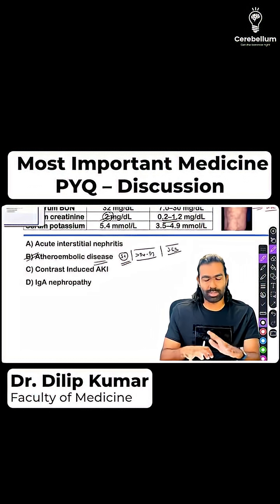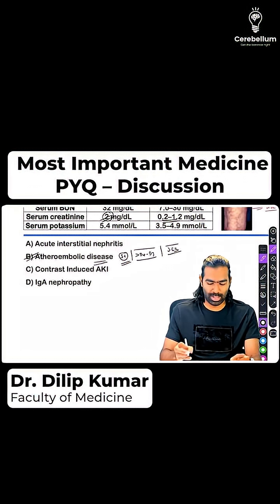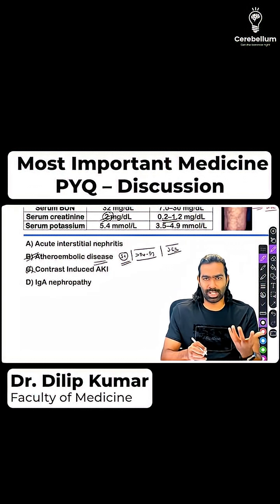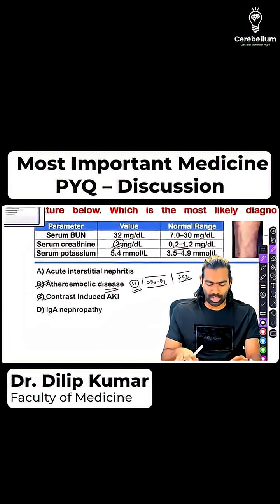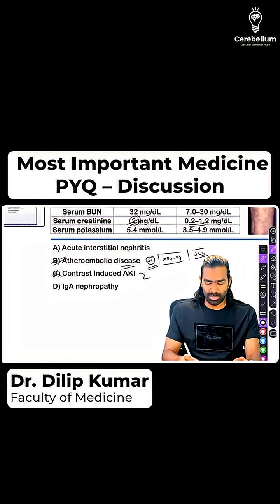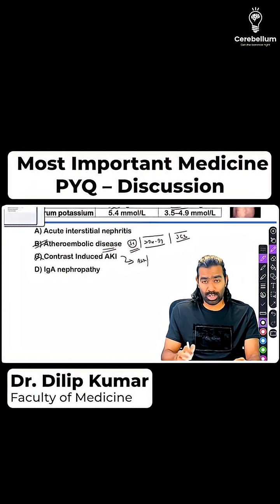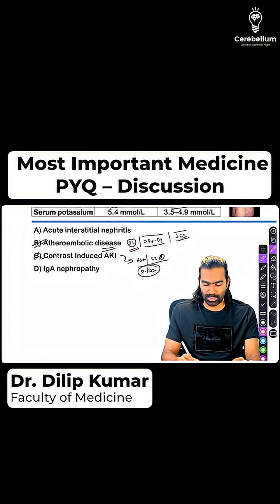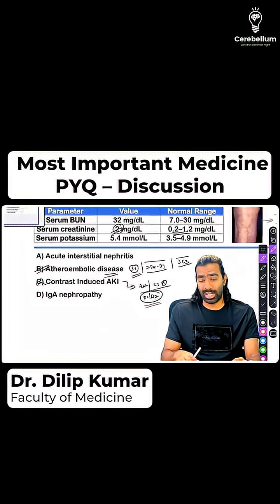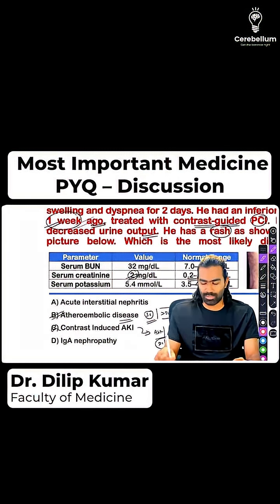Typical atheroembolic disease treatment is supportive and you can use high-dose statins. The closest differential in this case is contrast-induced AKI, since the patient underwent a contrast-guided PCI. I'm ruling that out because contrast-induced AKI is going to be asymptomatic, the patient will generally be non-oliguric, C3 will be normal, and it occurs very early — within the first 24 to 48 hours — whereas this case developed AKI almost a week later.